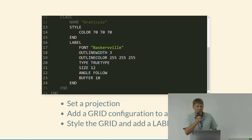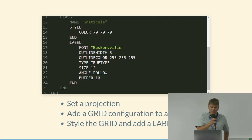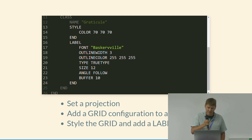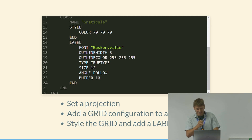For labels you can set any fonts available on your system. There are lots of different settings — you can have them styled in blocks, put buffers around them, have them following lines or features. The syntax is hopefully quite self-explanatory, but you'll probably need to go to the documentation to see what each setting does.